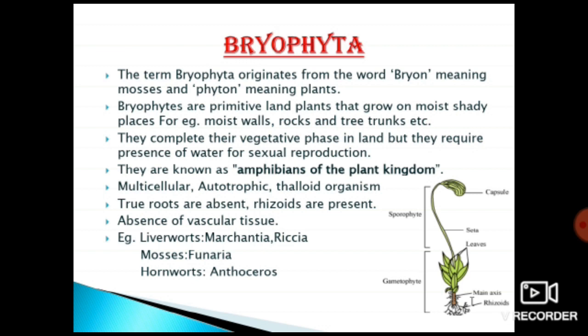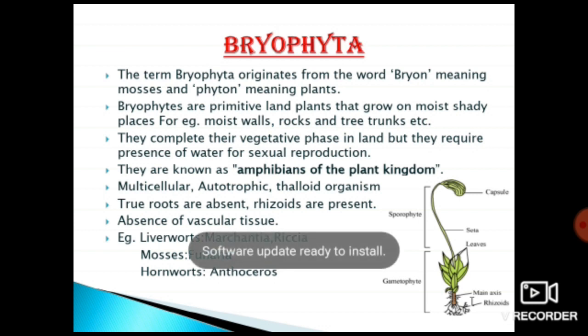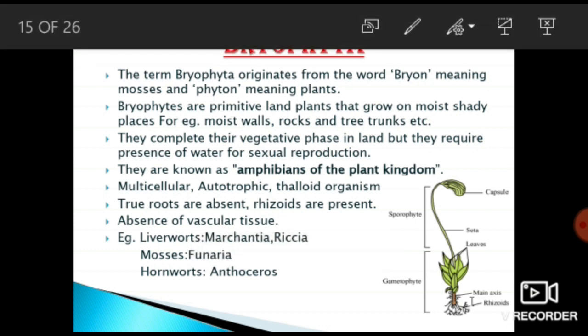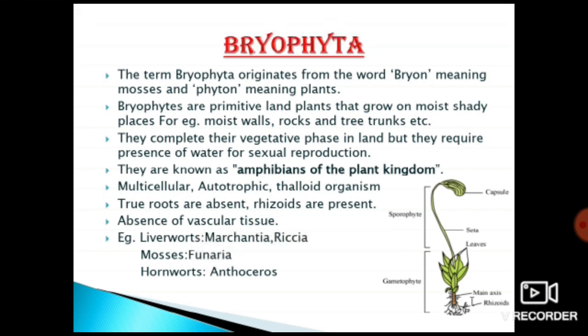As we know, bryophytes are cryptogams, which are primitive plants. Primitive plants means their body is not differentiated into roots, stems, and leaves. So bryophytes have a thaloid body — their body is not differentiated into leaves, stems, and roots.